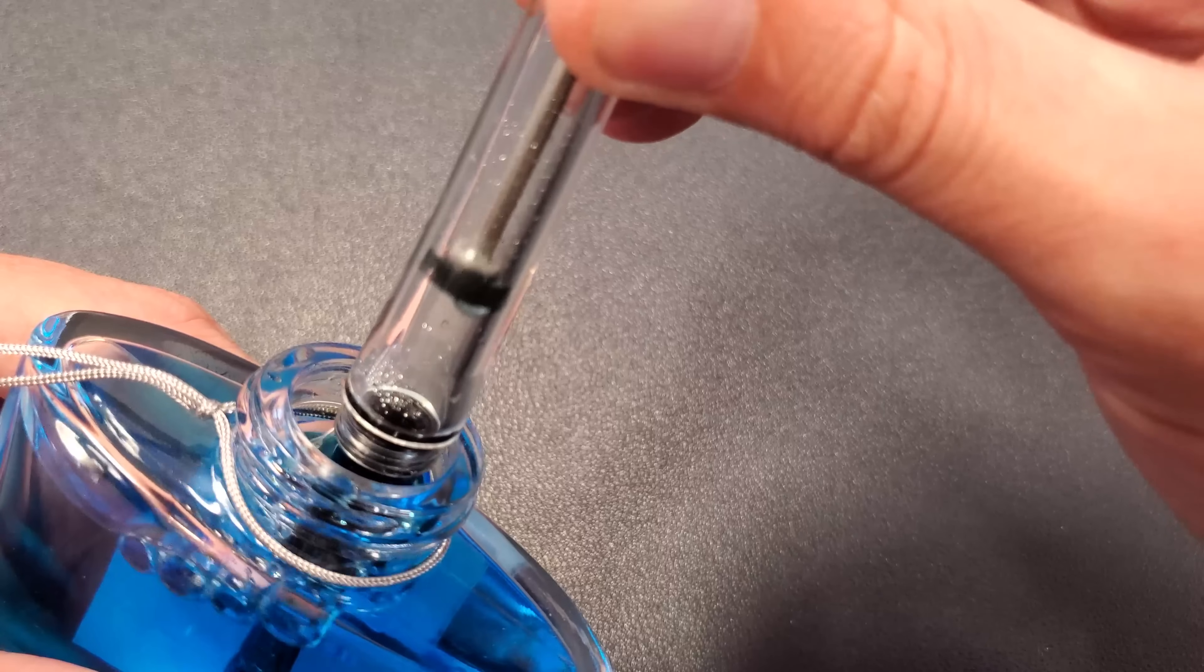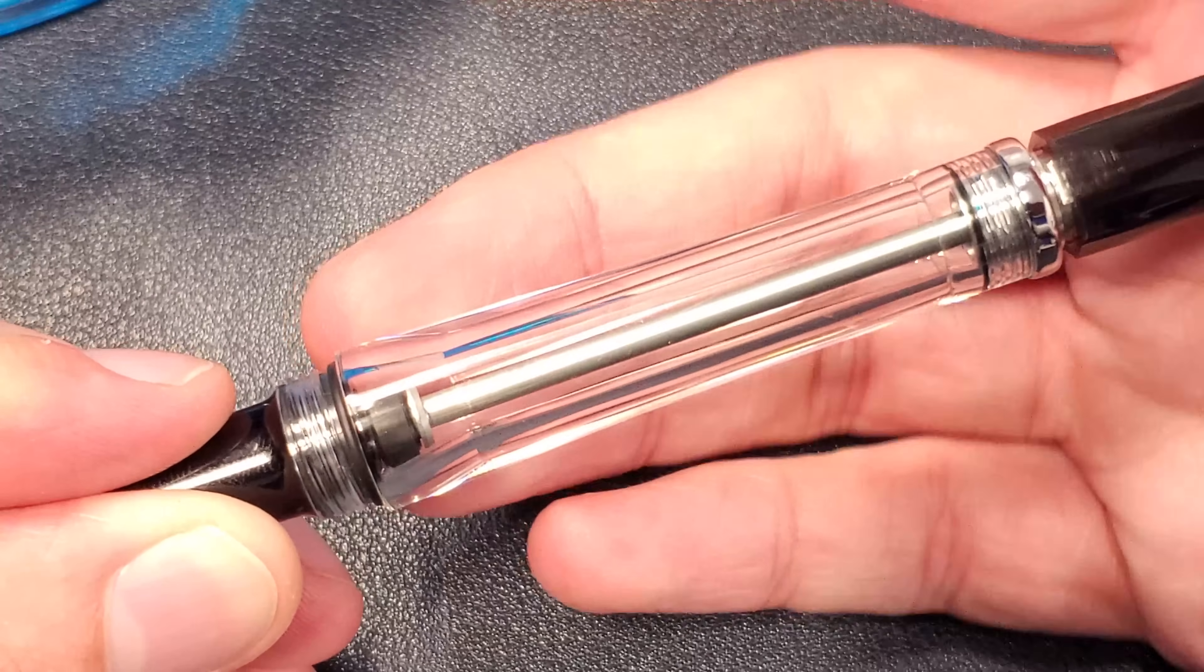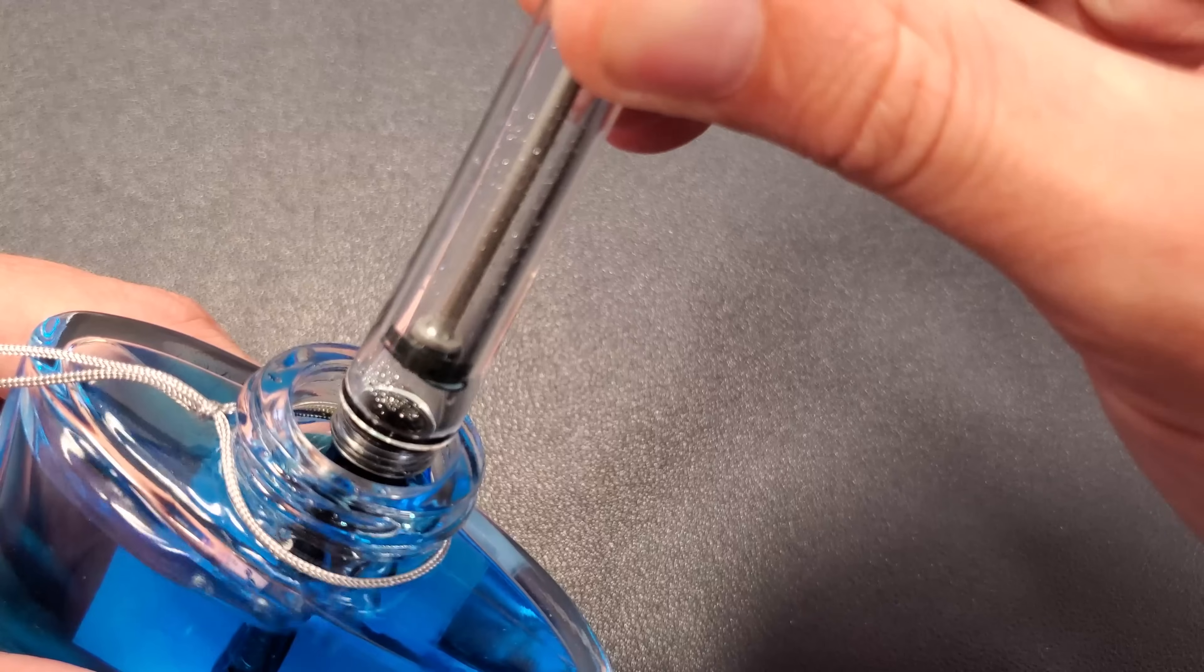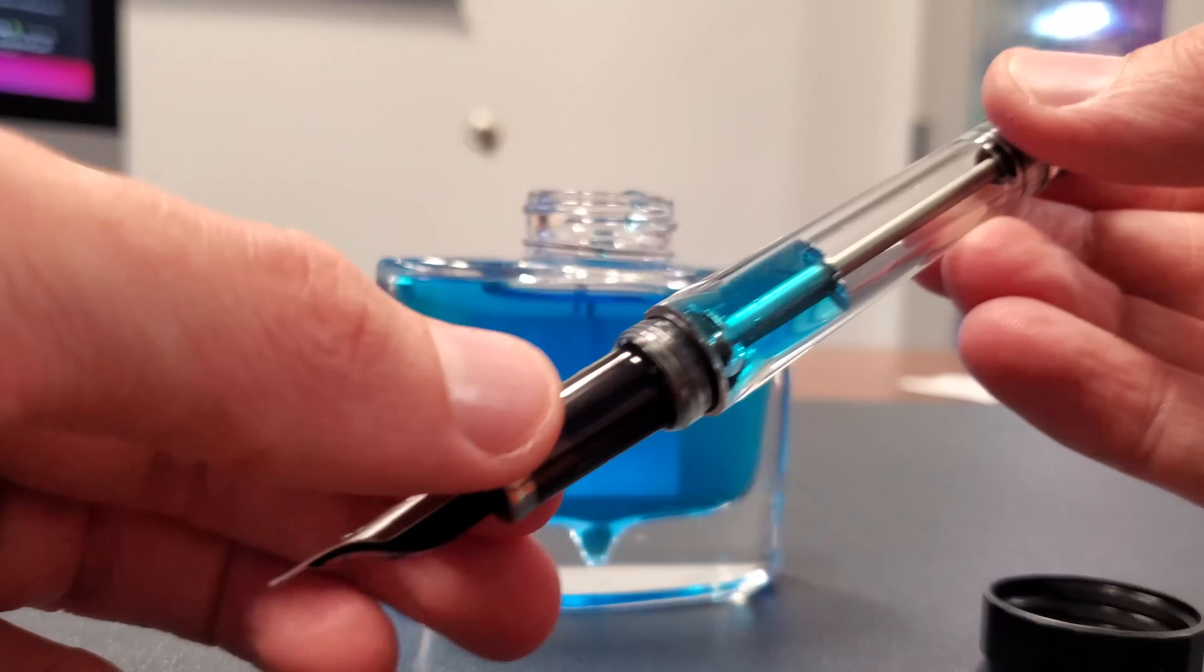Pressure builds, builds, builds, builds. And then once it passes that point, you get a satisfying click and negative pressure is created. And then ink is filled up into the ink reservoir.